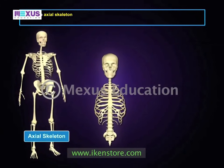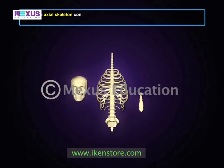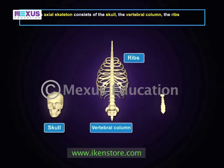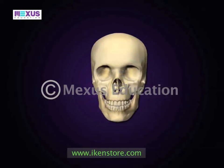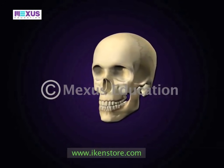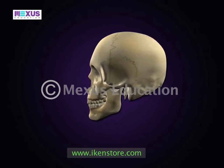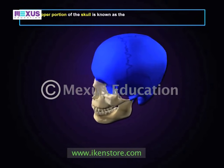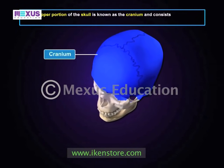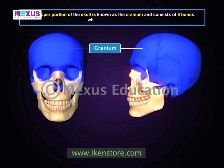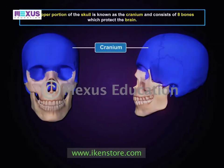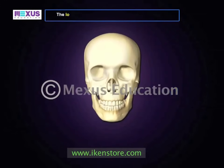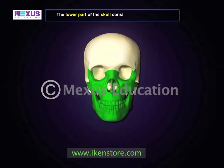The axial skeleton includes the basic framework of the body. It consists of the skull, the vertebral column, the ribs, and the sternum. The skull is the skeleton of the head. The upper portion of the skull is known as the cranium and consists of eight bones. These cranial bones surround and protect the brain.